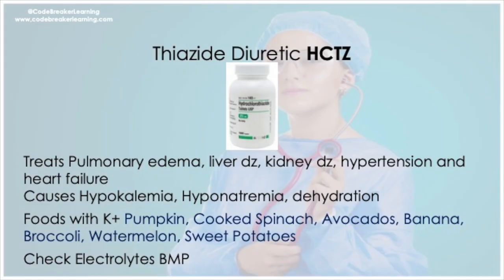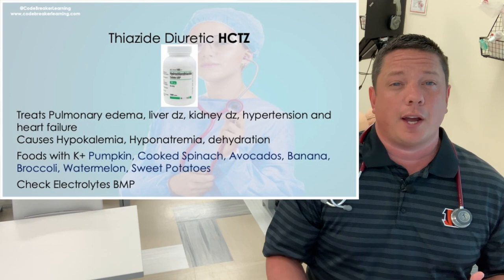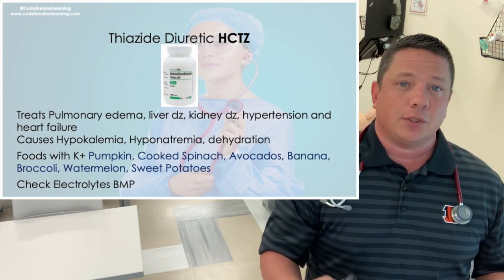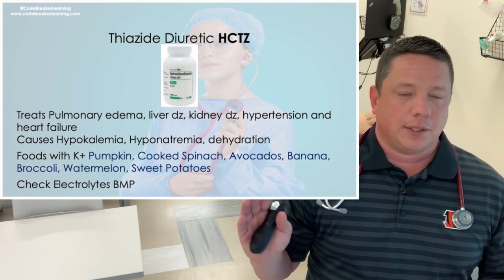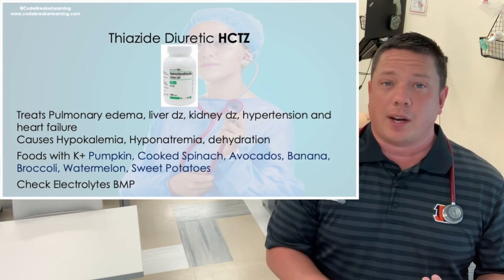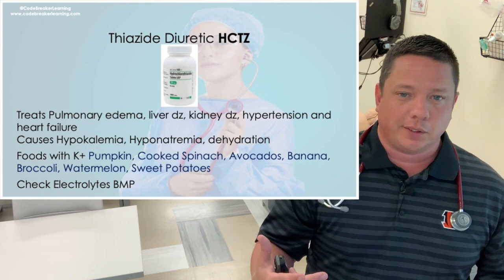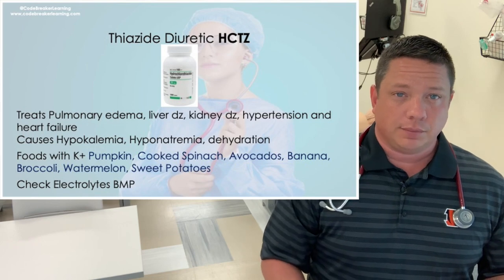The next medication is a thiazide diuretic — hydrochlorothiazide. It may also have the same risk for hypokalemia. With furosemide and thiazide diuretics, you want to encourage foods with potassium. If you look up the top 10 on Google, you're going to find pumpkin, cooked spinach, avocados, broccoli, bananas — though bananas aren't always on the list — watermelon, and sweet potatoes.